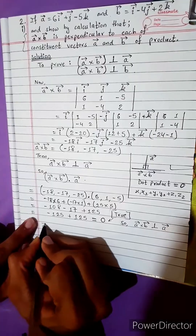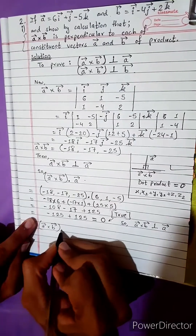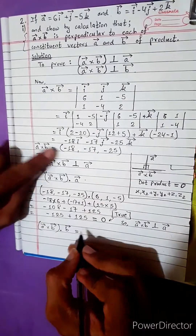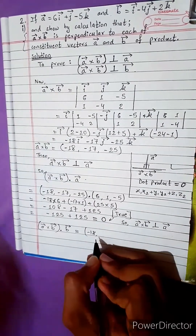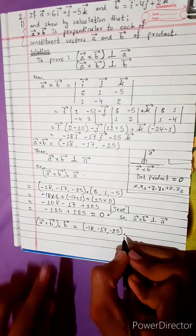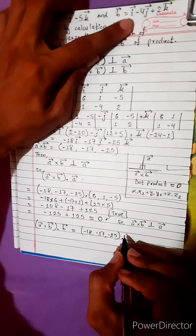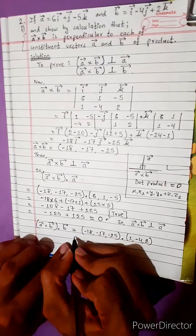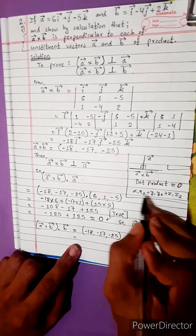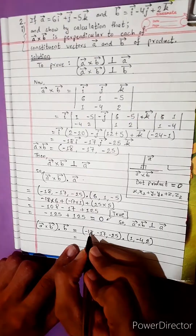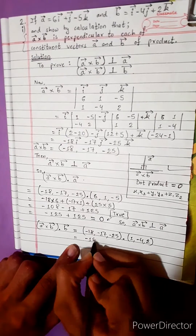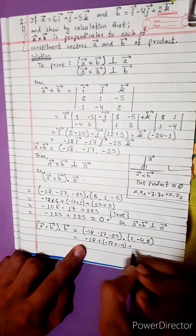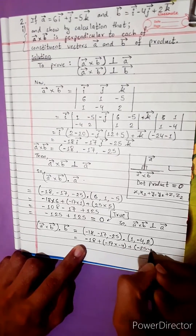Now, a vector cross b vector dot product b vector. We need to check this equals zero. The result is (-18, -17, -25) dotted with b vector. B vector is (1, -4, 2). Using the formula x1·x2 + y1·y2 + z1·z2: (-18) into 1, plus (-17) into (-4), plus (-25) into 2.